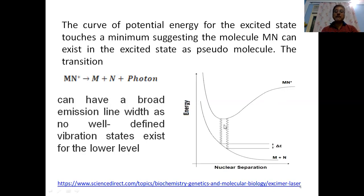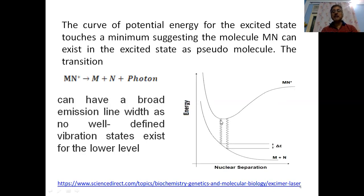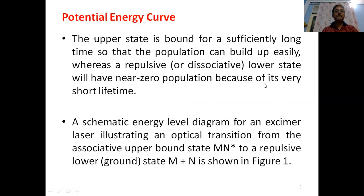In the excited state there is a minimum in the potential energy, so MN* can remain there for some time. This means there is a chance of building population inversion in MN*. The upper state is bound for a sufficiently long time to allow population inversion to build up, while the repulsive lower dissociative state has near-zero population because of its very short lifetime.